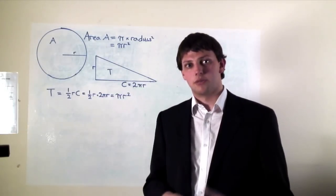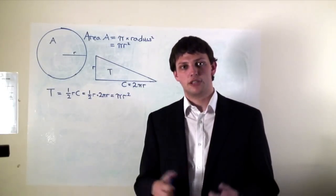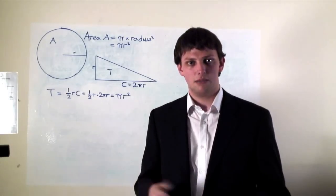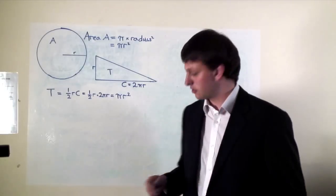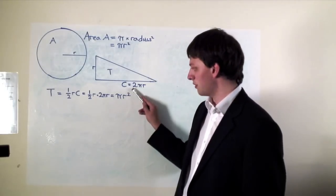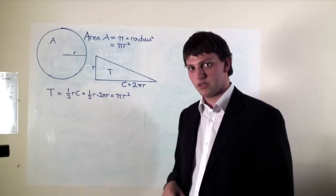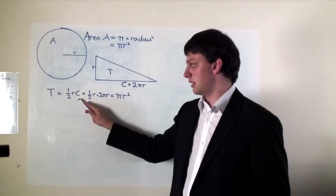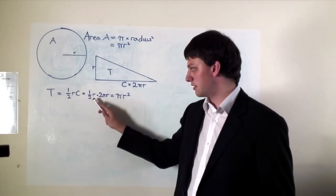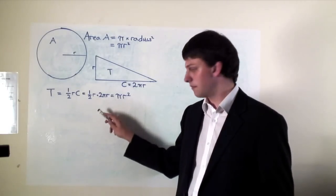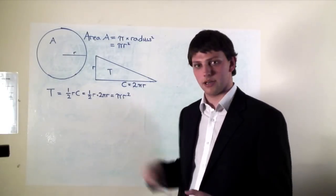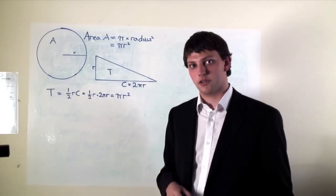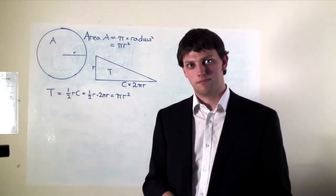By definition, pi is the ratio of the circle's circumference to its diameter, and the diameter is just twice the radius. So the circumference is 2 times pi times the radius. The area of the triangle is a half times its base times its height, which is a half times r times 2πr, which equals πr².